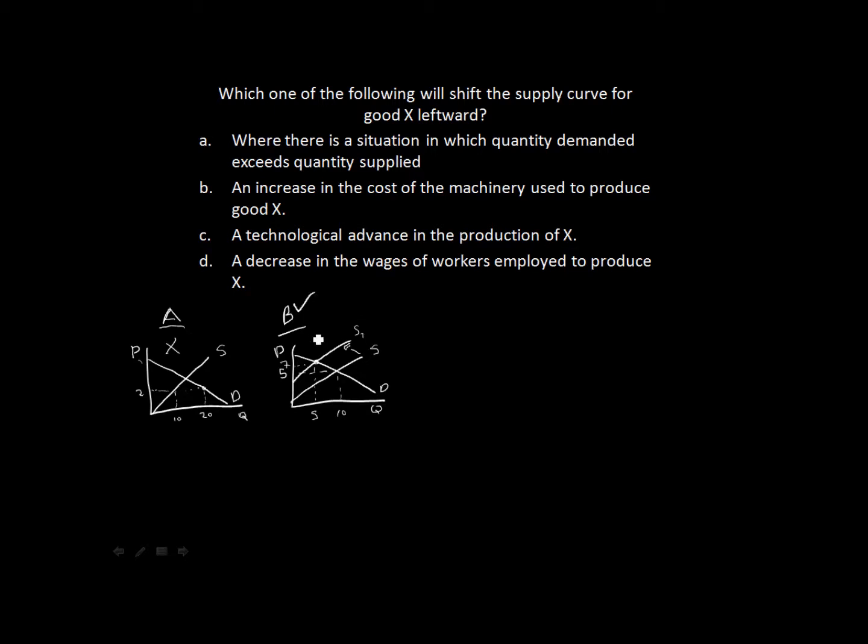But let's go through the others, because they've got some valuable information for us regarding economics. So let's take option C, which says there is a technological advance in the production of good X. So again, we make our graph. We show that we've got quantity on our horizontal axis and price on our vertical axis. We again indicate our supply and our demand curves.